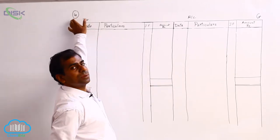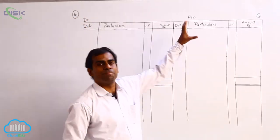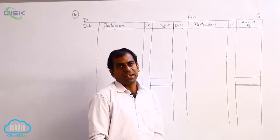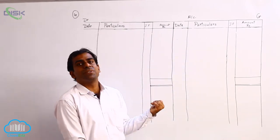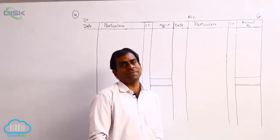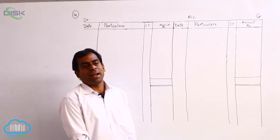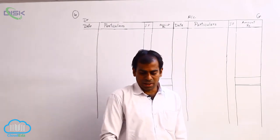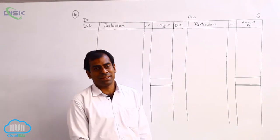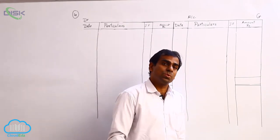We will be discussing the fourth problem, that is preparation of personal account of Swami. This is exactly the opposite of the third problem. In the third problem, we saw that we sold goods to Sudha and ultimately Sudha settled the account. But here, the beginning of the problem states that the amount is due to Swami.